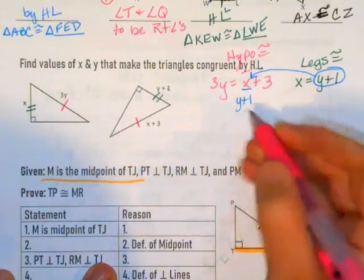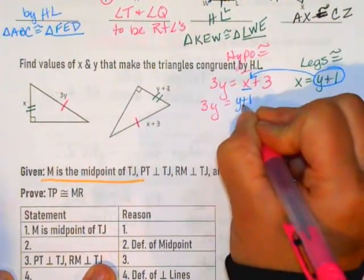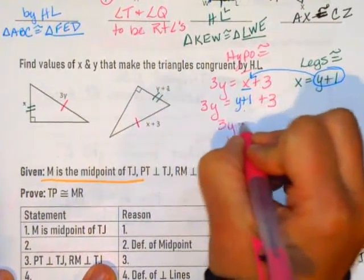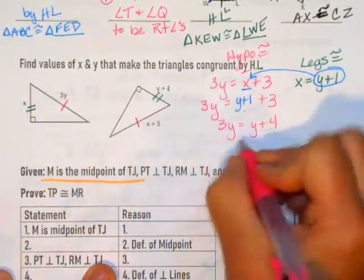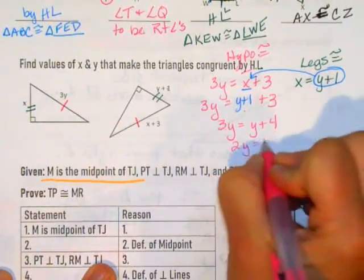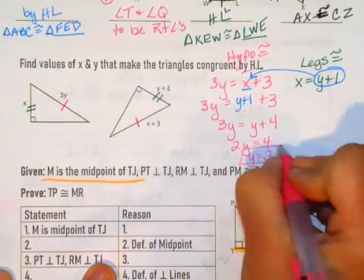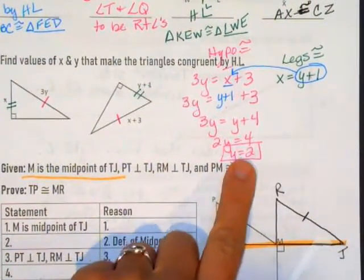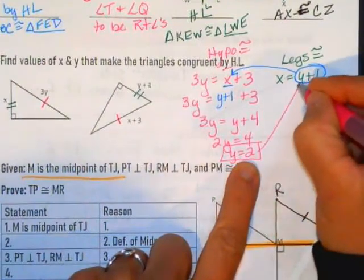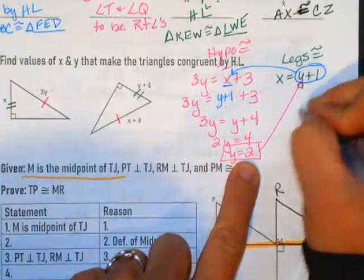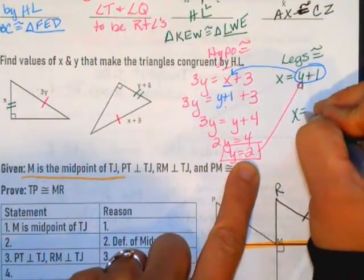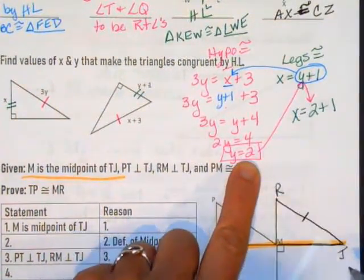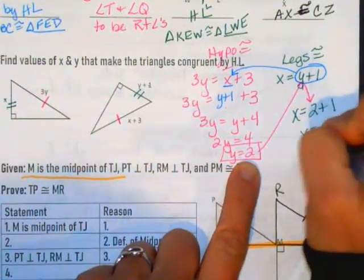Substituting X with Y plus 1 gives: 3Y equals Y plus 1 plus 3, which simplifies to 3Y equals Y plus 4. Subtracting Y gives 2Y equals 4, so Y equals 2. Now to find X: since X equals Y plus 1 and Y is 2, X equals 2 plus 1, so X equals 3.